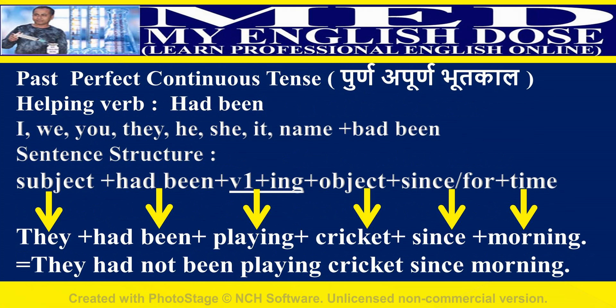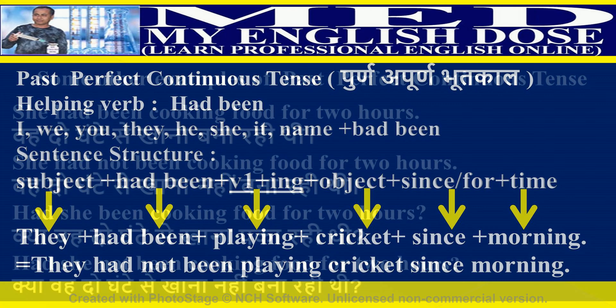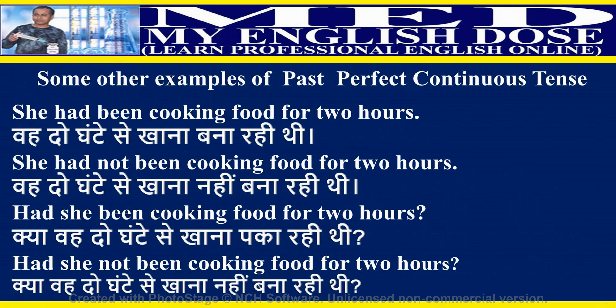Past perfect continuous tense helping verb is 'had been'. Use 'had been' with all nouns and pronouns. Sentence structure: subject plus had been plus first form of a verb plus -ing plus object plus since/for plus time. Examples: She had been cooking food for two hours. She had not been cooking food for two hours. Had she been cooking food for two hours? Had she not been cooking food for two hours?